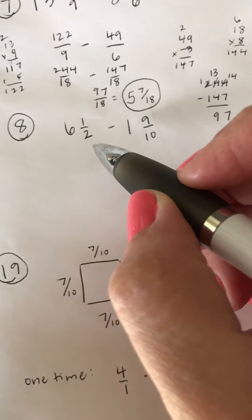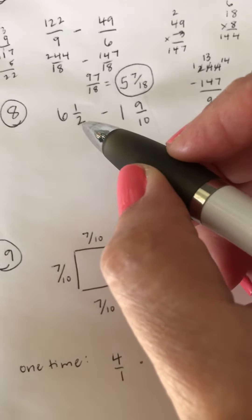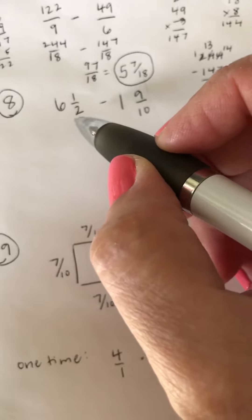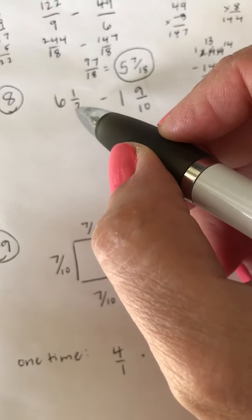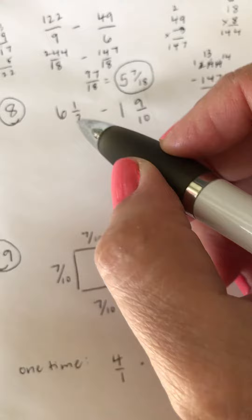All right, number eight, six and a half minus one and nine tenths. So again, these are mixed numbers, we want to change them to improper fractions.